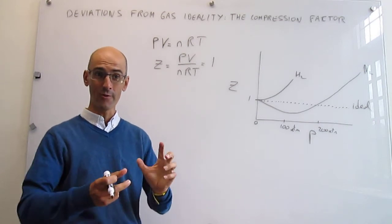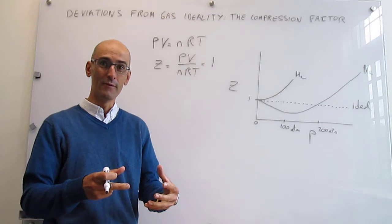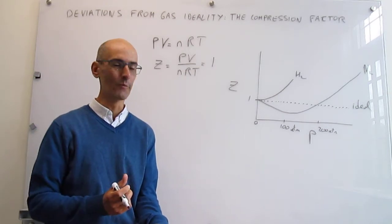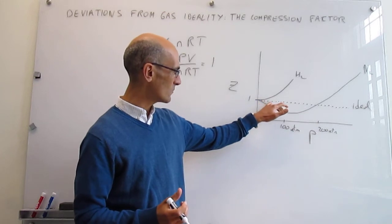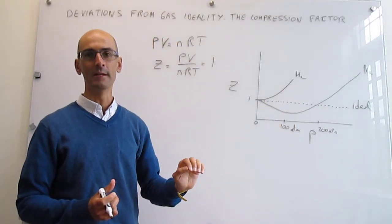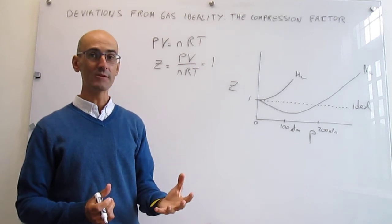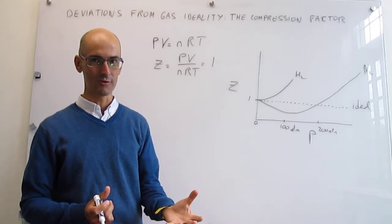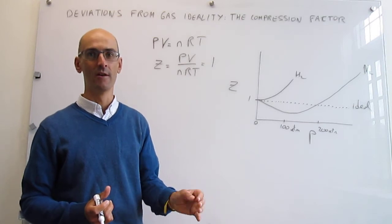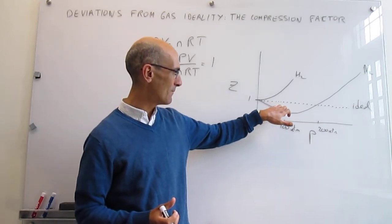If the gas molecules are attracting each other, the volume is decreasing and that gas is easier to compress. So in this range you're breaking apart from ideality because the dominant forces between those particles are attractions. In an ideal gas there are no interactions, so you don't have that dip.